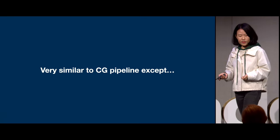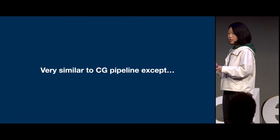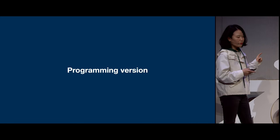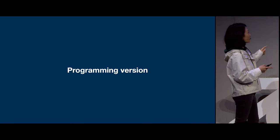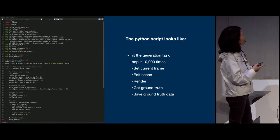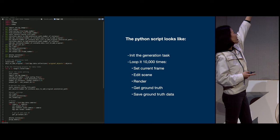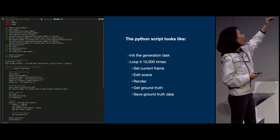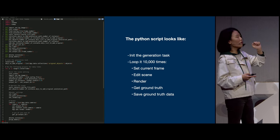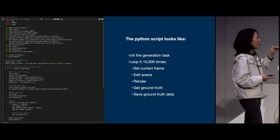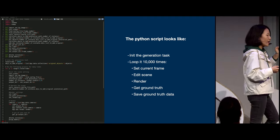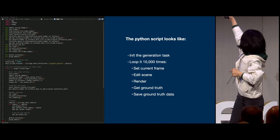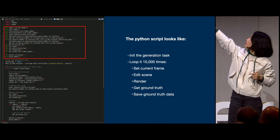As we all notice, this is very similar to our CG pipeline, except we have to do it by coding. The Python script will look like this: we initiate the generation task first, then loop the following steps many times. In each loop, we set the current frame, populate the scene, render, find the ground truth data, and save them. Exactly how we do each of these steps is defined in that part of the code. When we hit the run button in Blender, the generation process begins.